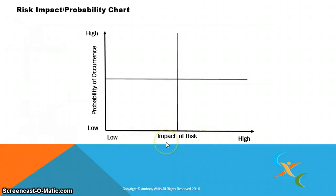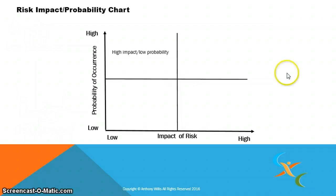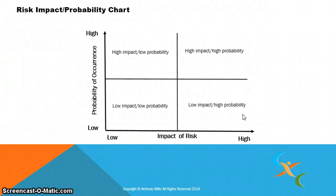In any undertaking, risks are involved and you need to be aware of the risks and the probability of occurrence. With a complex program such as the Guyana education sector plan — it's very complex and huge — implementers and decision makers need to be aware of the risks and their impact. This quadrant indicates high impact and low probability. Here you have high impact and high probability of occurring. Low impact, low probability. And low impact, high probability.